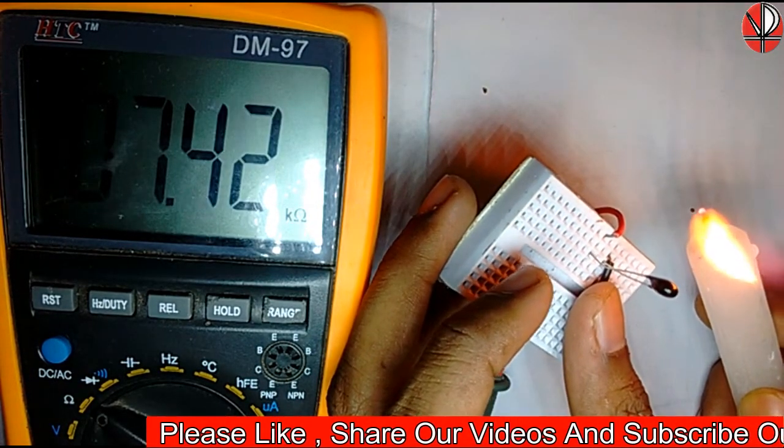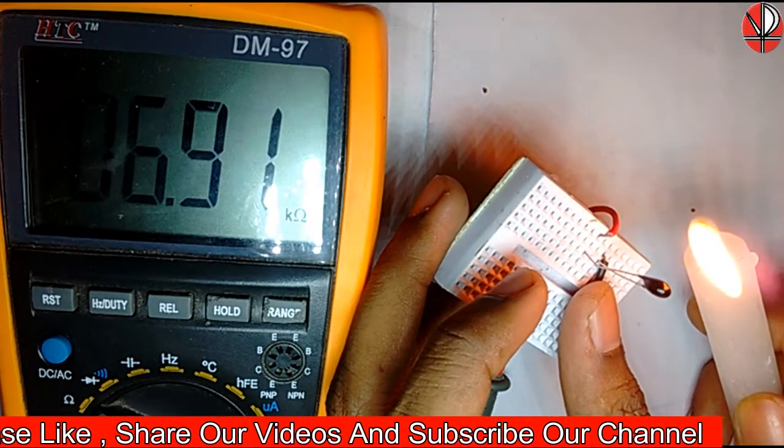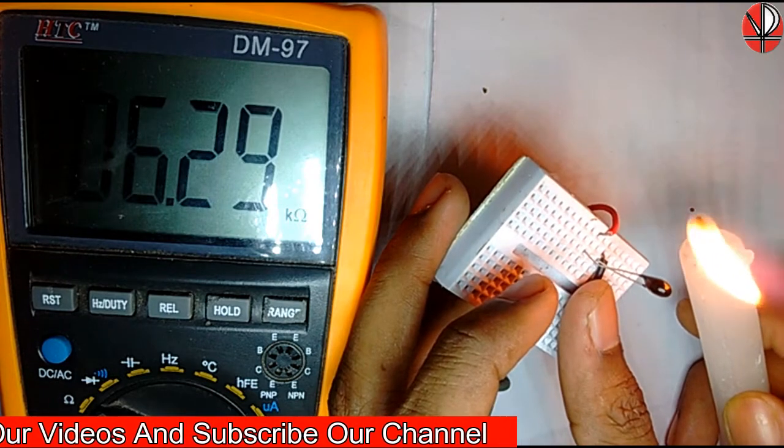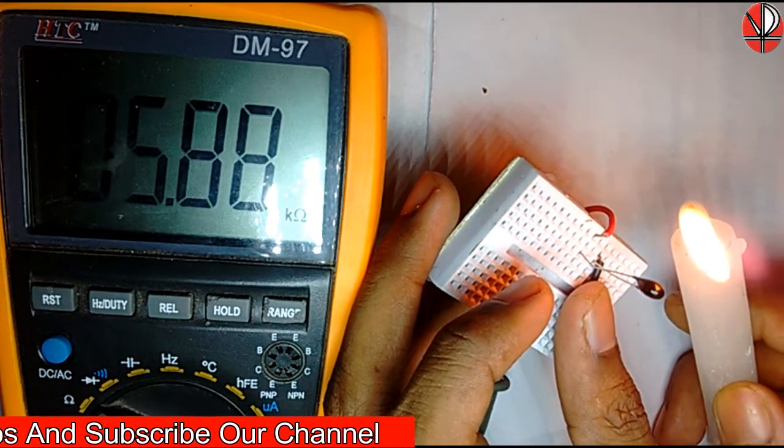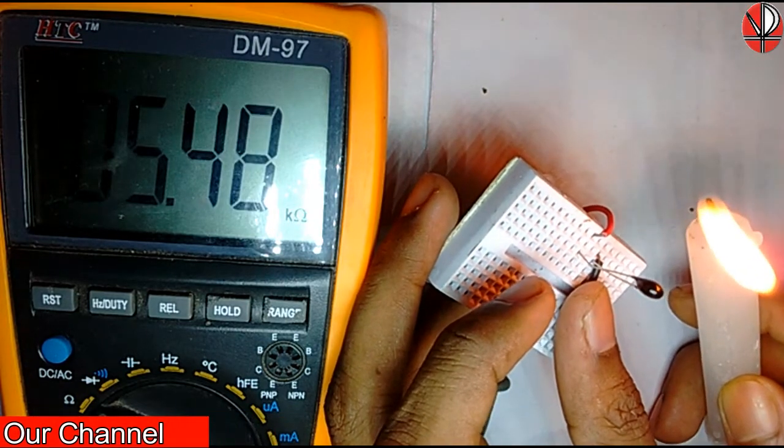You see it's decreasing. That means the resistance is decreasing with increasing temperature. See, this is decreasing very quickly. So with increasing temperature, the resistance of the thermistor is decreasing.